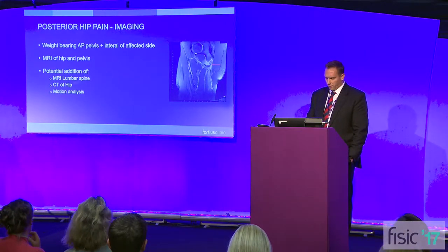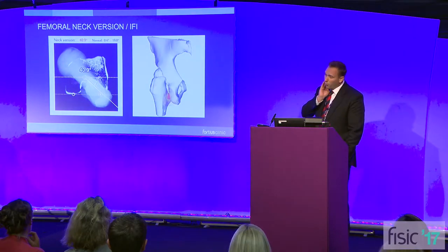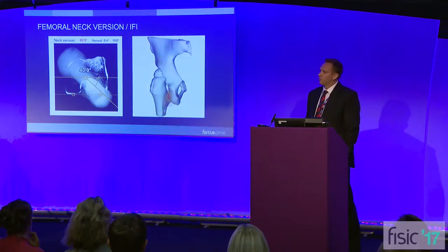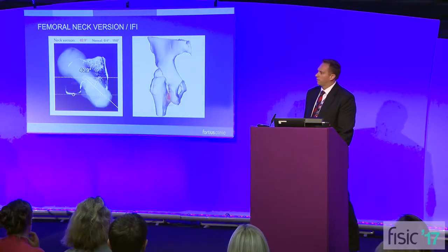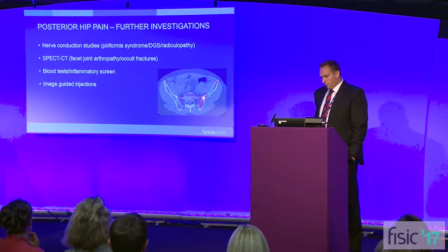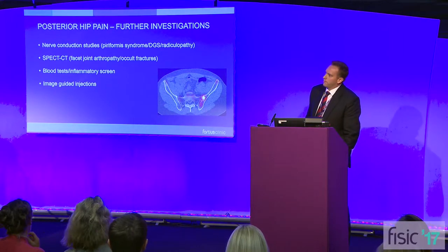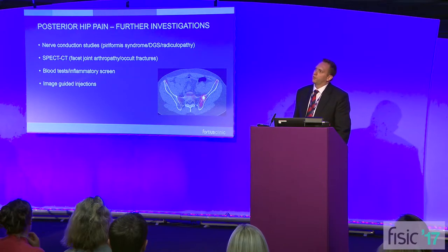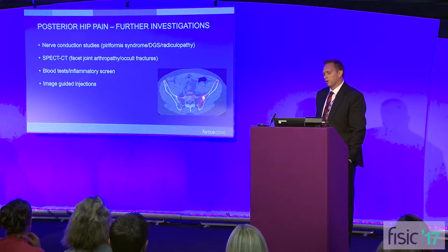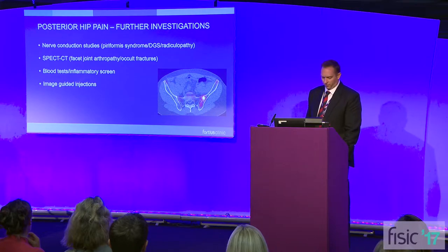CT and motion analysis is also extremely helpful. This is just a couple of snapshots from a motion analysis report demonstrating femoral neck anteversion at 41 degrees, suggesting this patient may be struggling with IFI among other things. Nerve conduction studies can be helpful, although I see a lot of people with neurological posterior hip pain and normal nerve conduction studies — so they can be helpful but don't necessarily exclude much.